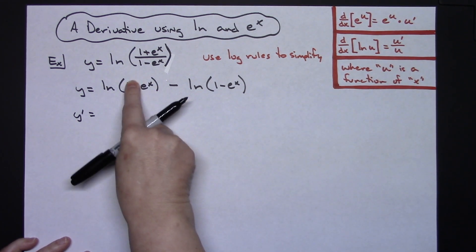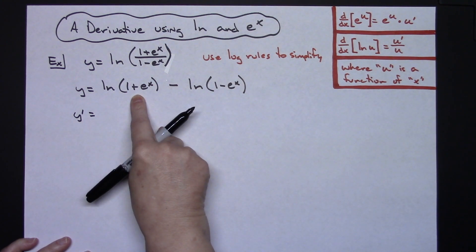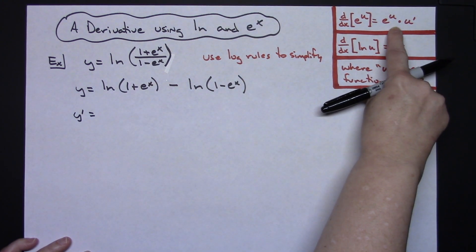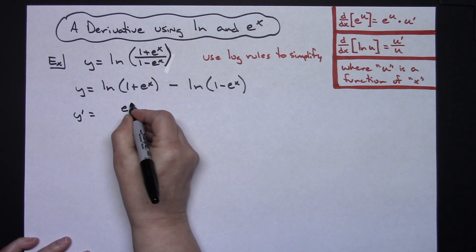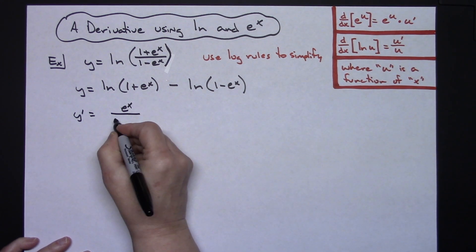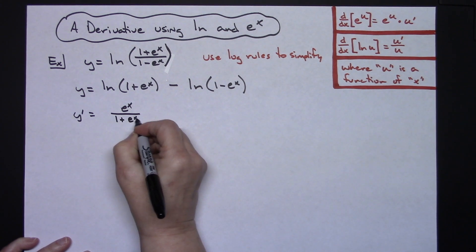The derivative of my inside here 1 plus e to the x, well derivative of e to the x is going to be e to the x times 1 or just e to the x, and then all over the u which is 1 plus e to the x.